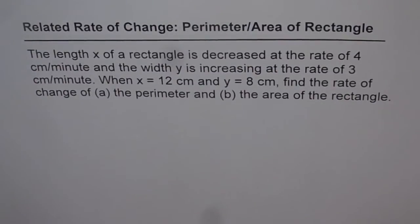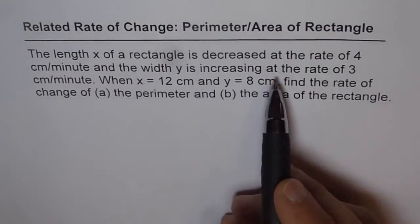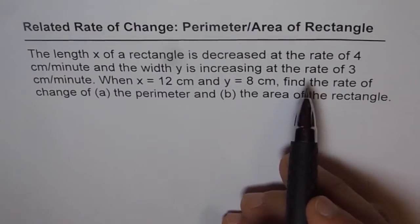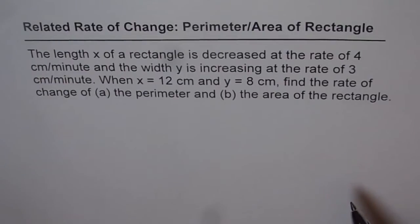Related Rate of Change — we will consider the perimeter and area of a rectangle. The length x of a rectangle is decreasing at the rate of 4 cm per minute, and the width y is increasing at the rate of 3 cm per minute. When x equals 12 cm and y equals 8 cm, find the rate of change of the perimeter and the area of the rectangle.